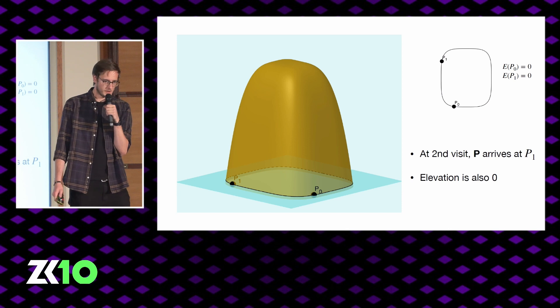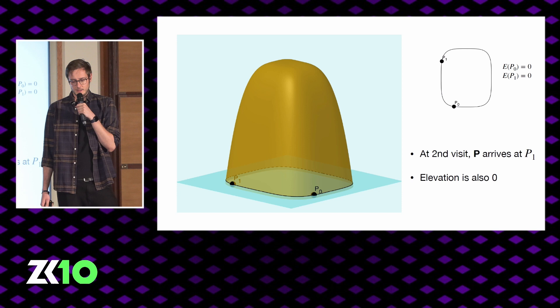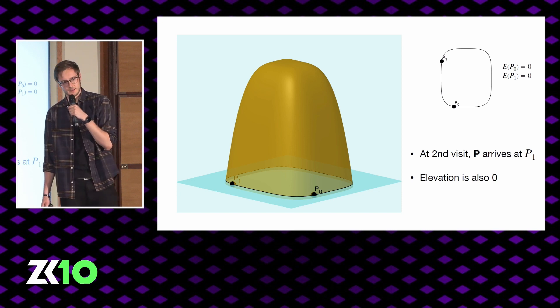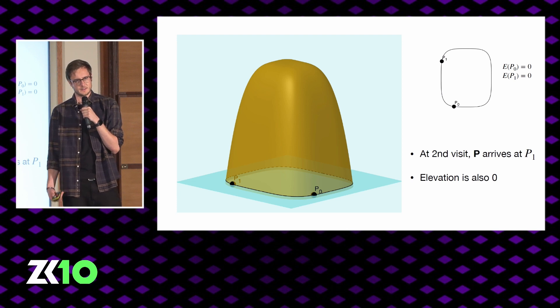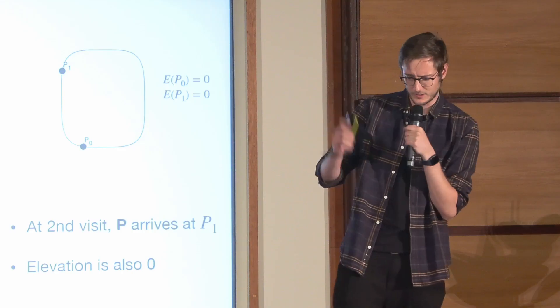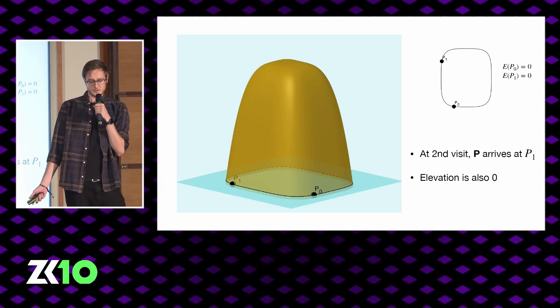Now for the second visit, the prover arrives at another point P1. And again, because it's at sea level, we expect the elevation to be 0. So he notes it down, picks up the fruit, but he's going to do a little something extra because he wants to convey to the verifier that he's actually visited the island.